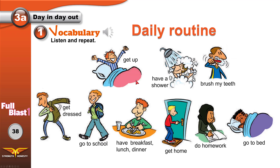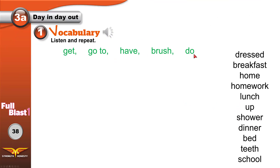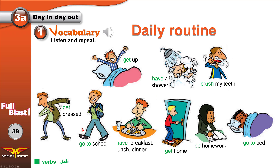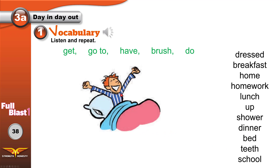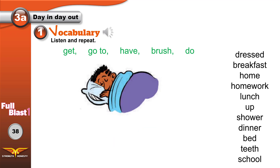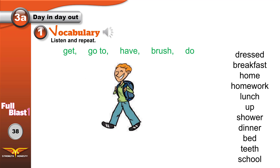We all do these things every day, so they are our daily routine. Daily means every day; routine means something that happens every day. Look at the first word in each phrase — they are all verbs. I've separated the verbs from the nouns and prepositions. I'll show you a picture and I want you to say the correct verb-phrase combination before I say it.